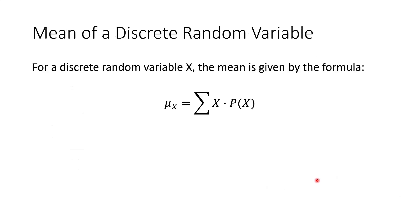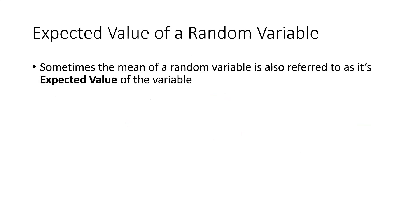And it turns out, actually, that's always the case. So if you have a discrete random variable, then you can calculate the mean, just by summing up each outcome times its probability. Sometimes, the mean is also referred to as its expected value. And this application comes up in a lot of places, but particularly in places where money is involved.